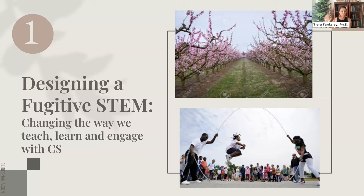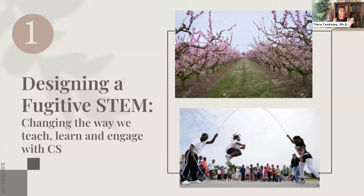A metaphor that resonates closer to where I grew up is double dutching. Anyone who's double-dutched knows it's a collective endeavor — the twirlers, the crowd cheering you on, the collective chants. Being a twirler is an important and underappreciated role. We had to make sure the jumper gets through the portal safely without being hit by the cords. Making this portal — this liminal space — is about collectivity, understanding what that jumper needs. Every jumper is different; we can adjust the ropes, go slower or faster.